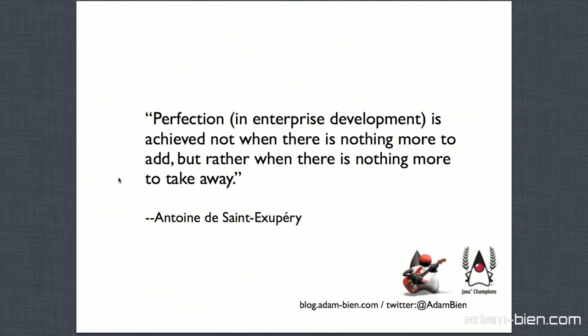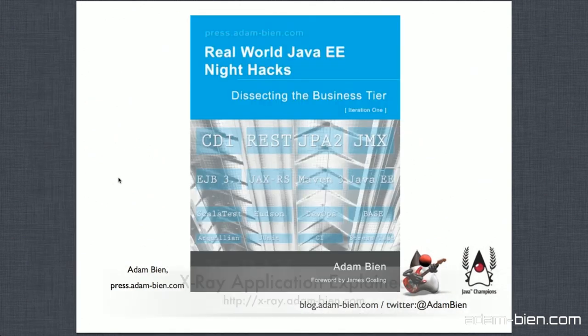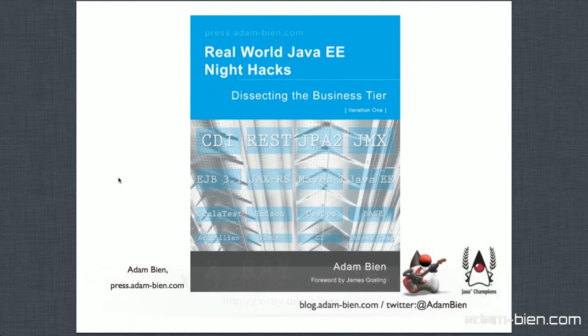With JavaEE 6 you can concentrate on the business logic and inject the infrastructure later. This is one of my recent books — it talks about rethinking best practices. It describes a small application I've written for my weblog called X-Ray, which is real-time statistics software written with JavaEE 6, Maven 3, and REST services.